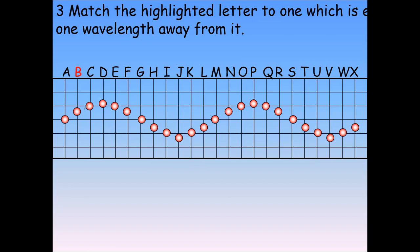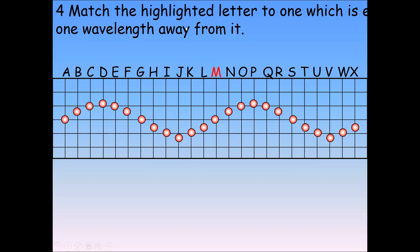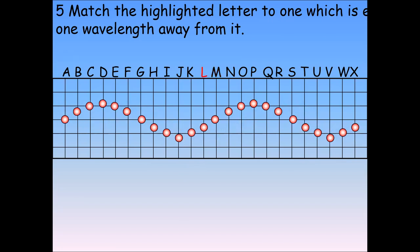For point B, which point is one wavelength apart? When we draw the line again, that equals point N — so N is one wavelength apart from B. For point M, when we draw a horizontal line there is no other point in that direction, so going in the opposite direction, point A is there — so the wavelength apart from M is A. The distance between two successive crests or two successive troughs is known as wavelength.